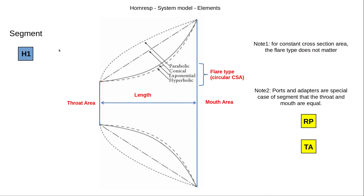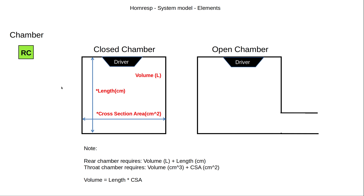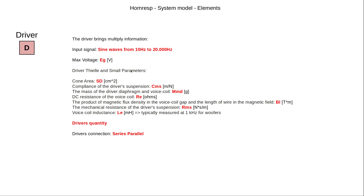Regarding segments, inside each segment it will carry information about the horn profile, like the size of the horn, the size of the throat, and so on. Chamber is the same — it will carry information regarding the chamber, like whether it is a closed chamber or an open chamber. The driver will carry a lot of information, like Thiele-Small parameters, how many drivers are assembled in the loudspeaker, how those drivers are connected, and so on.